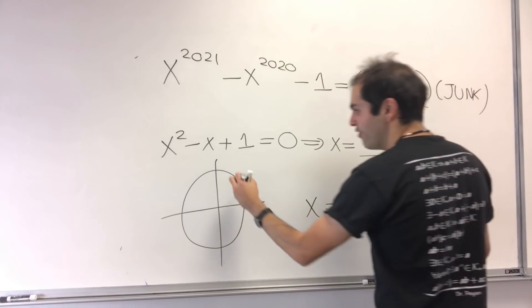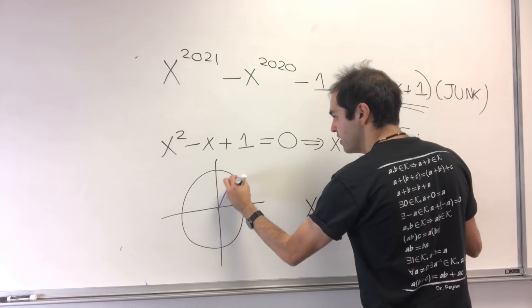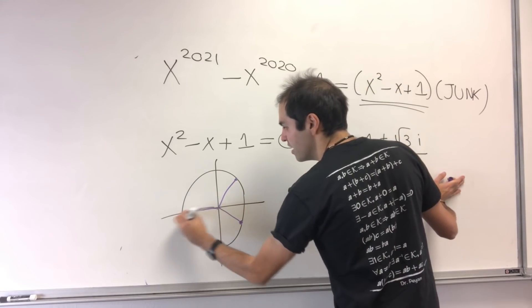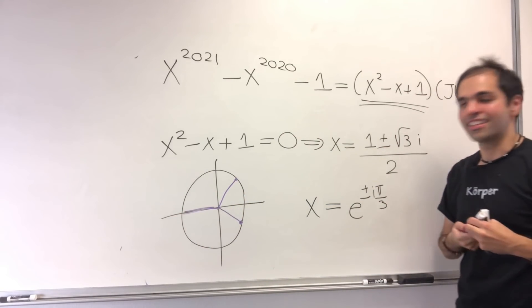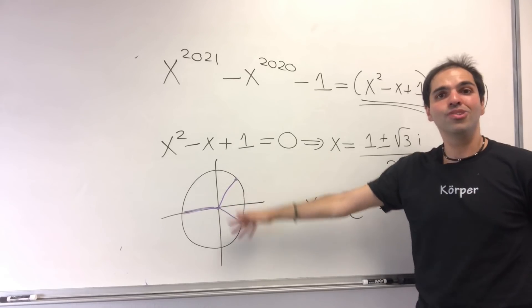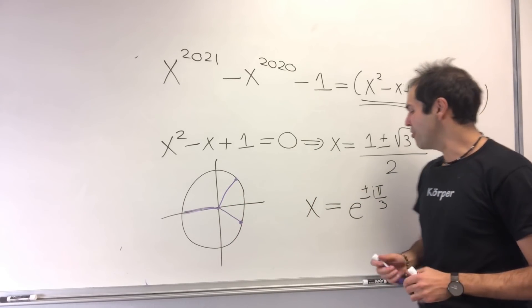So, if you want to graph the roots, one is here, and then one is here. And usually, we have also the other root -1, which is not the case here. And the cool thing is, it kind of divides the unit circle into three equal parts.